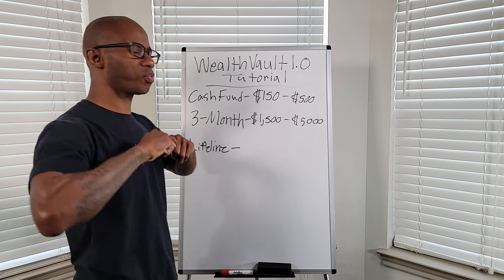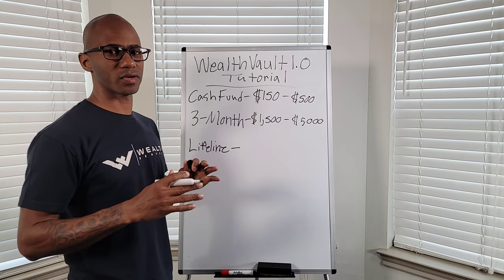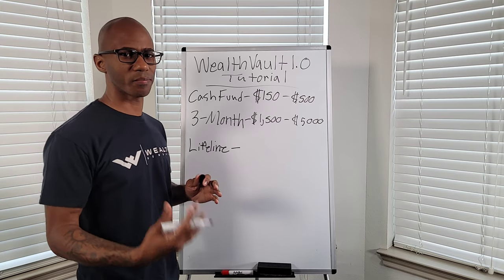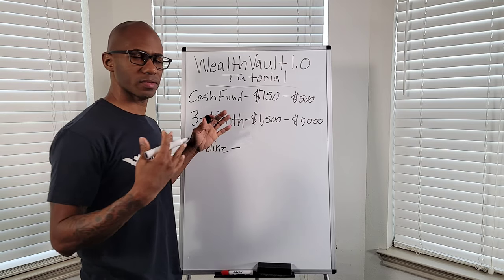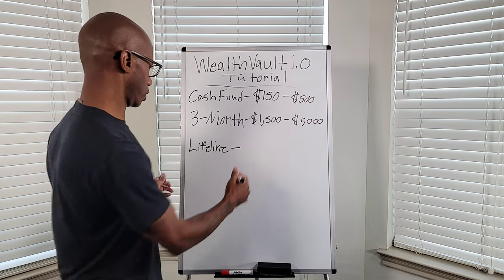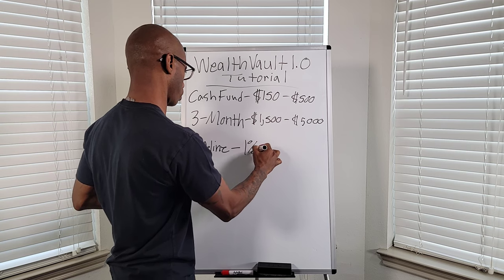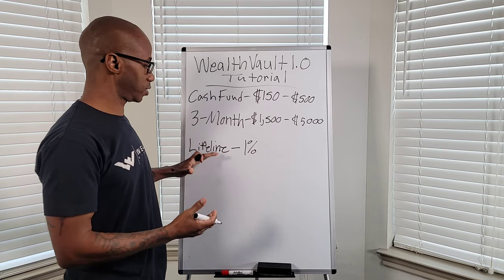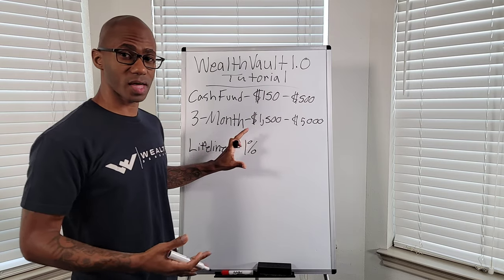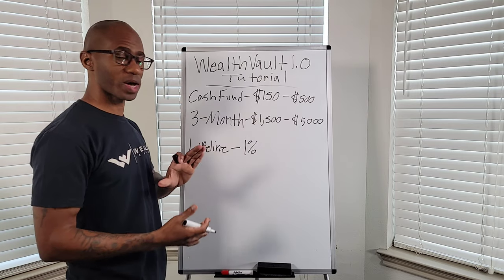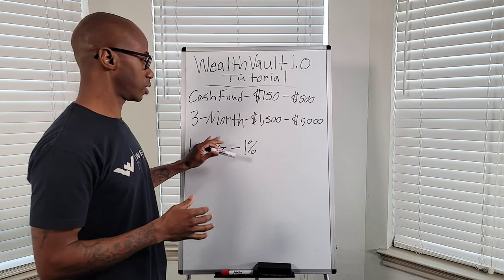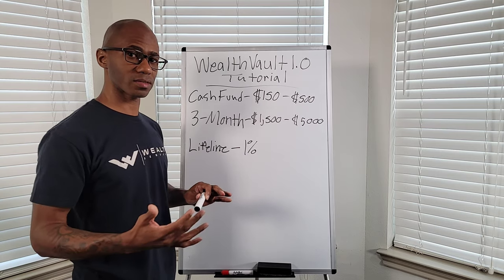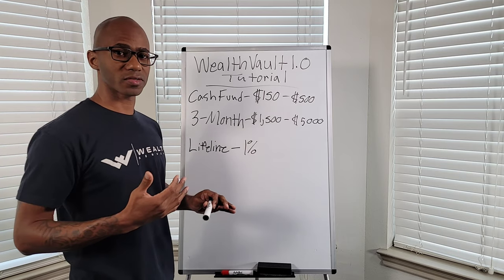This account is different from the top two accounts — actually, those two accounts protect this account. You want to create that barrier with those two accounts. The lifeline: you're only going to put 1% of your weekly or biweekly earnings. If you're on salary and get paid monthly — say you're a teacher — you only put 1%.